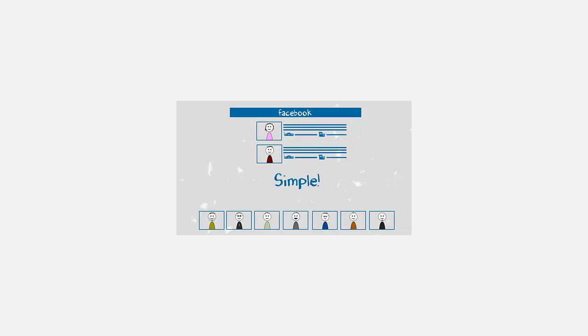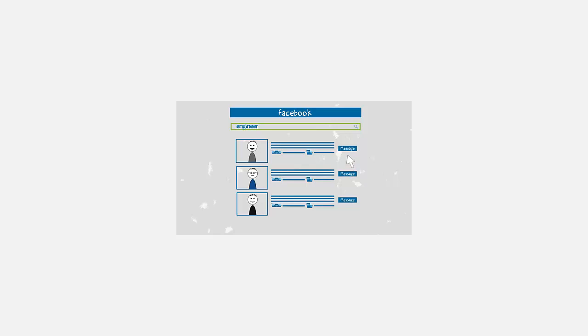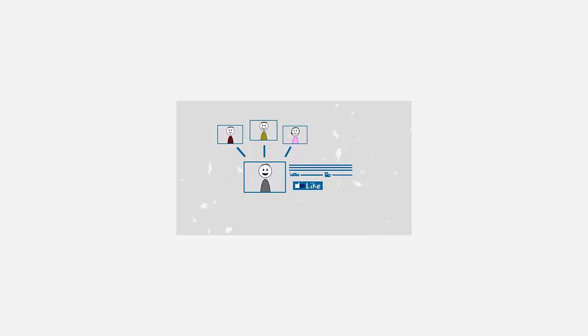Work4's Graph Search Recruiter makes sourcing simple. We import the jobs from your ATS, search for the candidates who fit your job descriptions, and even give your team a way to track who applies. All you have to do is click a button to discover and contact local talent, talent connected to your employees, talent who likes your company, talent who works in your industry, and more.